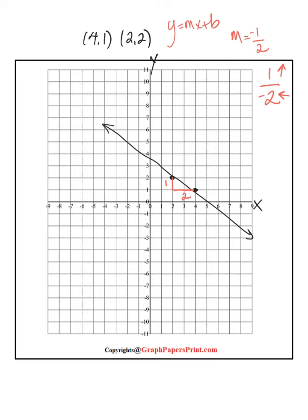I'm going to go up one and to the left two. That gives me my y-intercept of positive three. So that is my b.